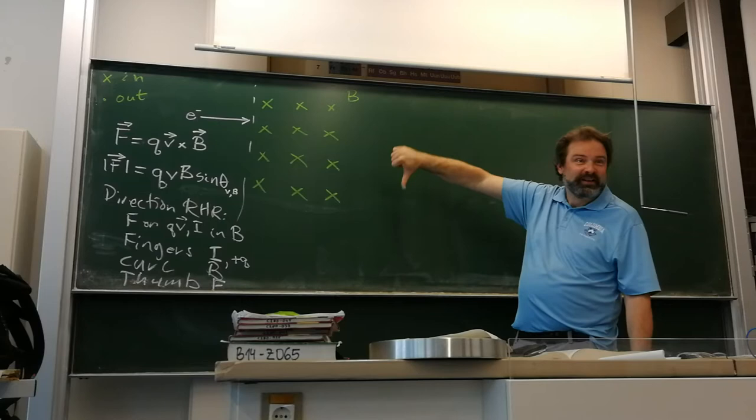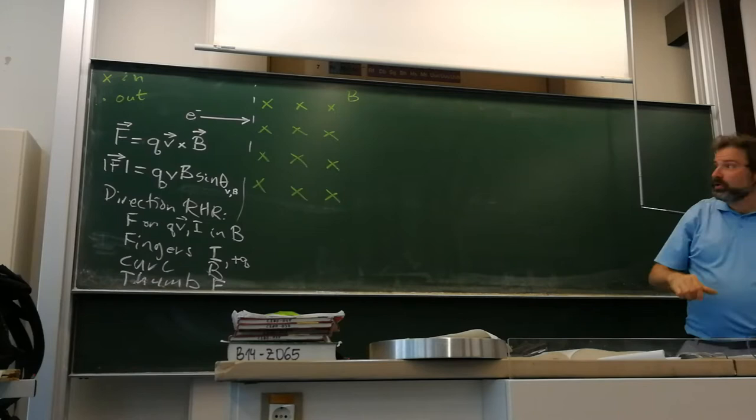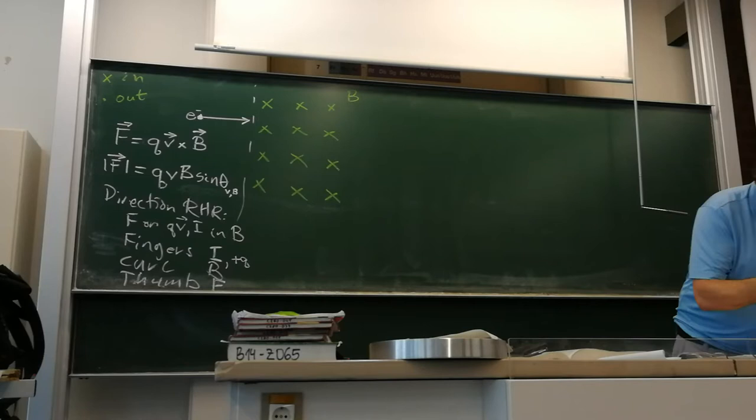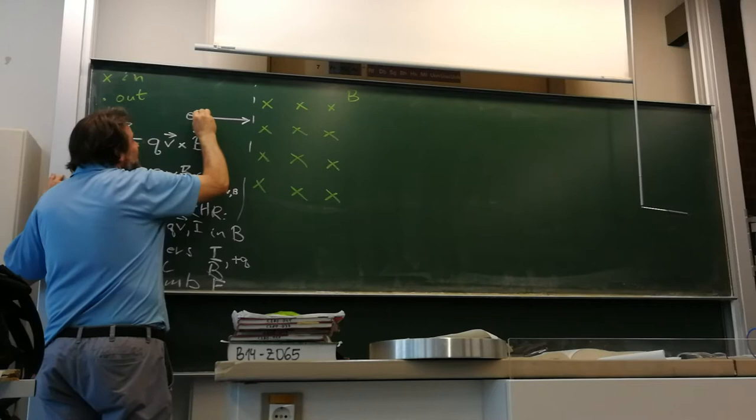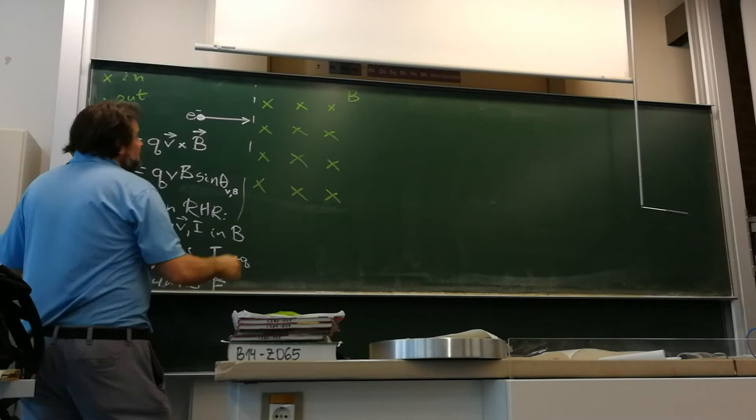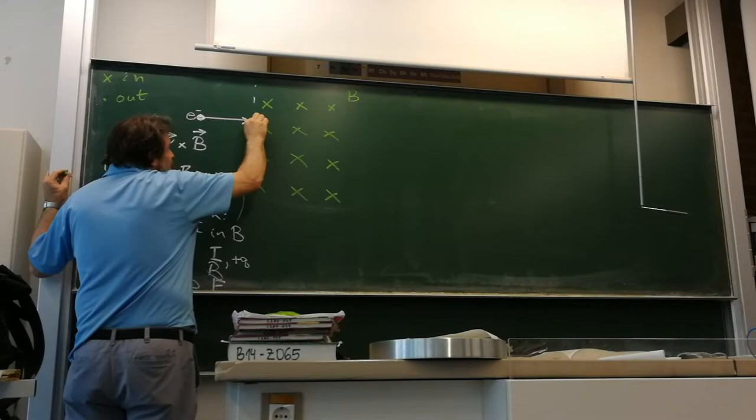Whoa, let's put it here. Let's go. Fingers in the direction of the current. Curl your fingers in the direction of the magnetic field. And, or in the direction of plus Q. And then your thumb indicates the direction of force. Okay, so let's apply that here. The electron is moving to the right, so that means the current is moving to the, Sam? Left. Left. Good.